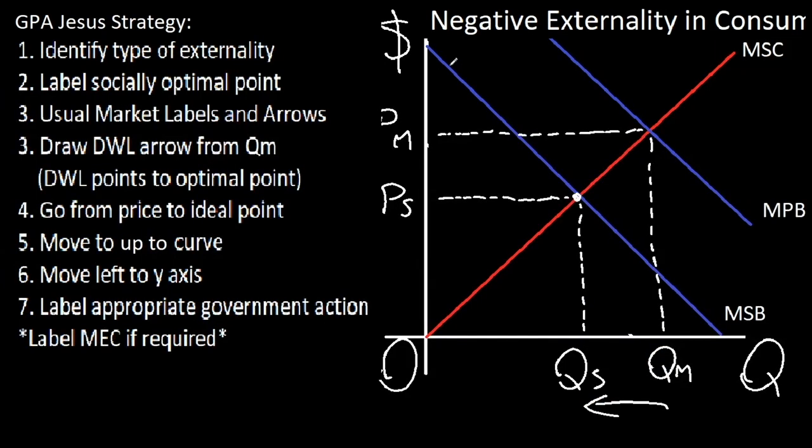So now that we know about externalities, let's go through the GPA Jesus strategy for handling externality questions, which I'll definitely create a practice video in the future for. So the first step we want to take when approached with an externality type question is identify the type of externality we have. For this example, we'll try a negative externality in consumption using the same graph from the example earlier. We want to then label the socially optimal point, which is where MSC meets MSB, which is right here already labeled. Now we have to do the typical econ labels of your quantities, your prices, your title, and you have already done all of that. So here's where it gets much more complicated.